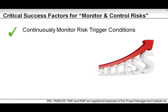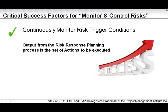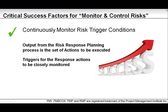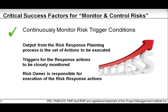Let's go back to the critical success factors. Continuously monitor risk trigger conditions. The output from the risk response planning process is a set of actions to be executed. The triggers for the response actions must be closely monitored. Risk owners are responsible for execution of the risk response actions — it is not the project manager. The monitor and control risk process oversees that the risk owner is actually taking the action they need to take.